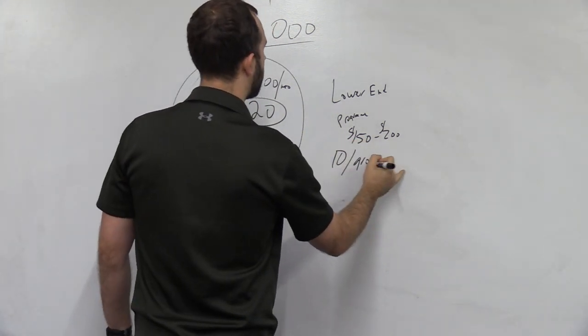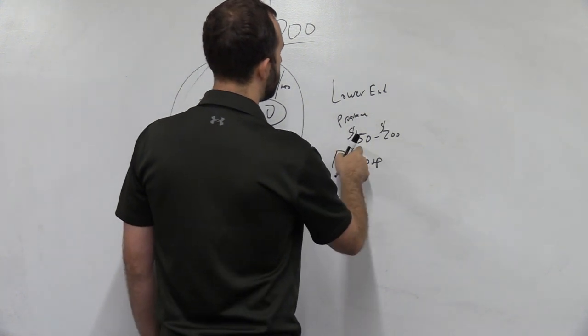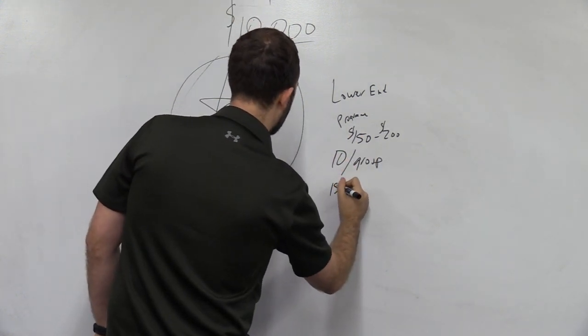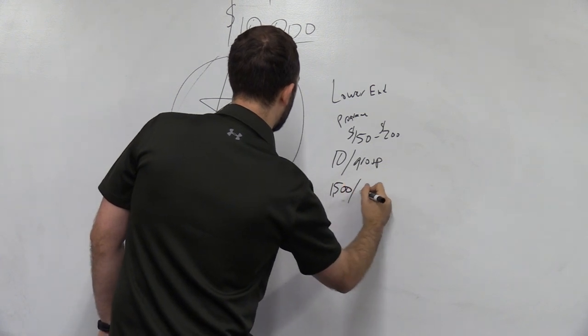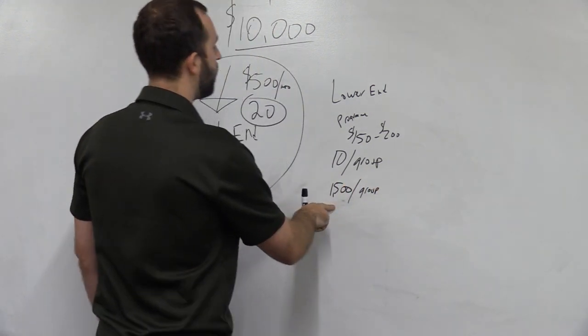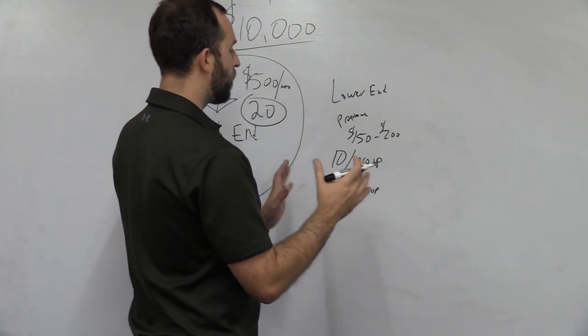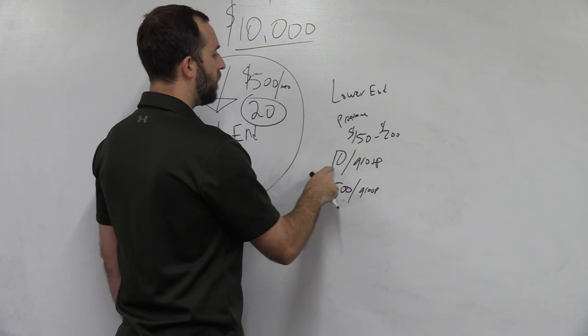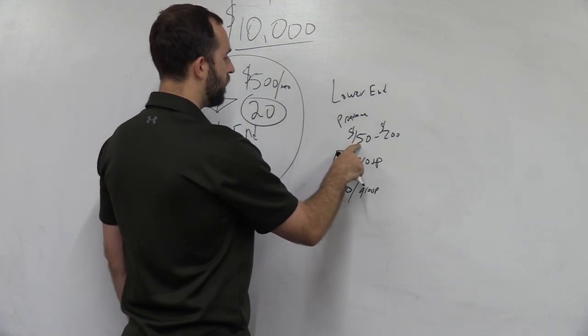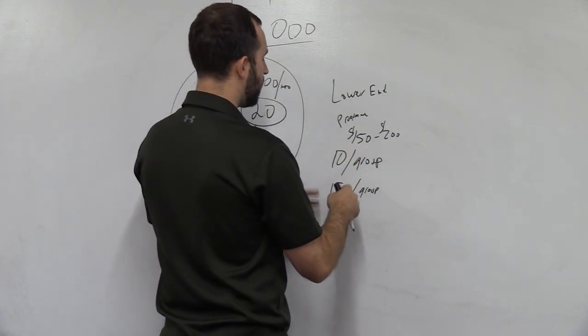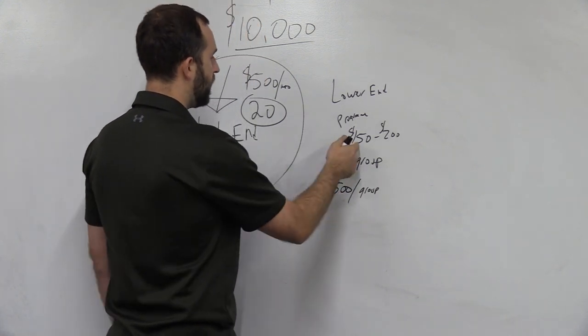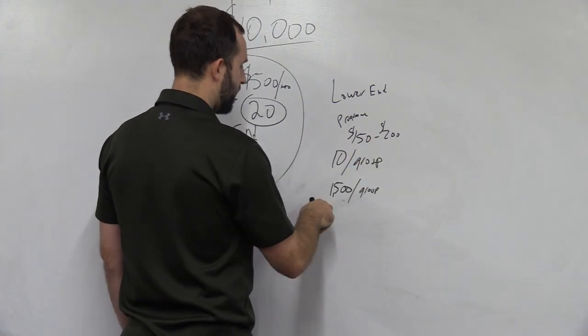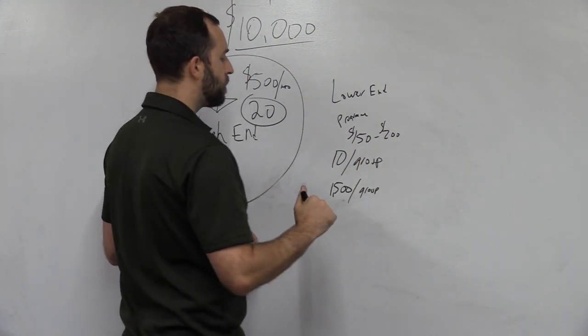So we have 10 clients per group. So if we take 10 times 150, that means you're doing 1500 per group. So for one hour of training per week, if you have this set up the way I'm talking about, it's 10 clients, 150. So it's 150 per client. And you take 150 times 10. That's 1500 per group. If it was 200, this would be 2000 per group. Very simple math.